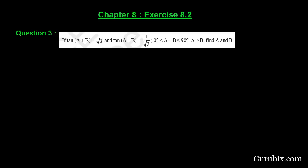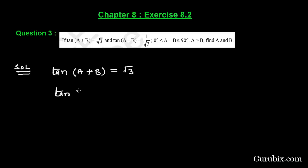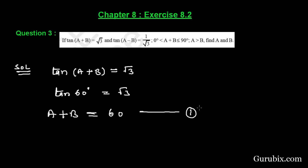This is a very important question. Let us solve it. We are given tan(a+b) = √3, and we know that tan 60° = √3. Comparing these two equations, we get a+b = 60°. This is our equation number 1.